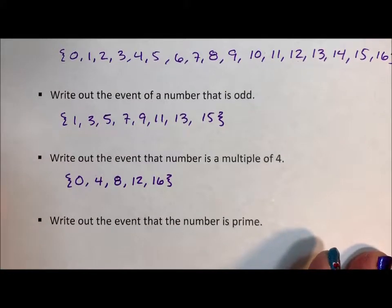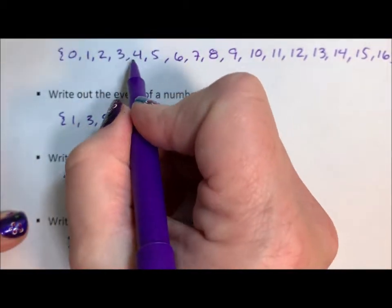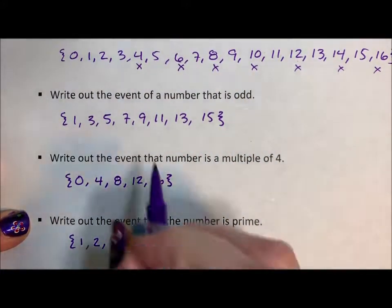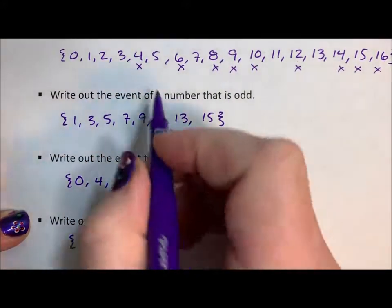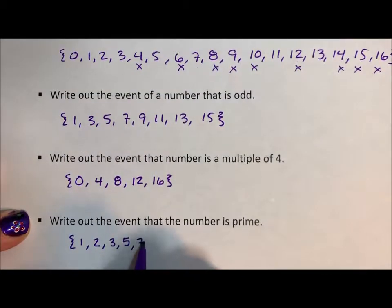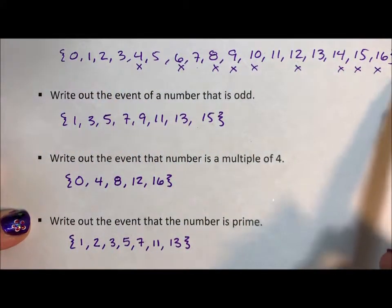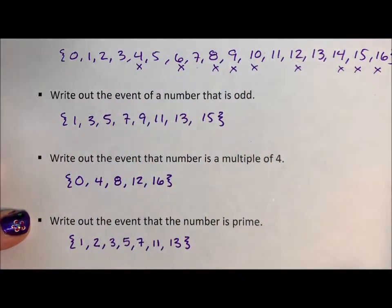And now write out the event that the number is prime. Prime numbers are numbers that are only divisible by one and themselves. So two is the only even prime. Four can't be prime, and 6, 8, 10, 12, 14, 16 are all multiples of two. Three, six, nine, twelve, fifteen are all multiples of three. We've knocked out four, but we now have five. Five, ten, fifteen — then six, seven, eight, nine, ten, eleven, thirteen. Fun fact: when you're doing a list of numbers and knocking out primes, you only have to go to the square root before you've hit all of them. So once we got to four, I knew we had hit all the numbers that needed to be knocked out, and everything that didn't have an x under it was indeed prime.